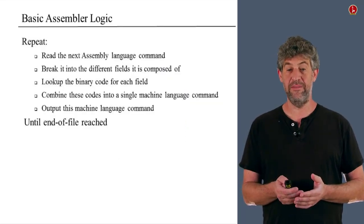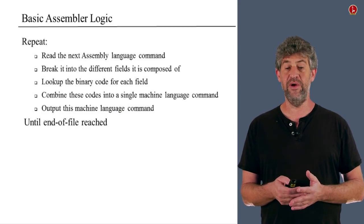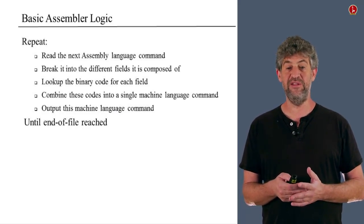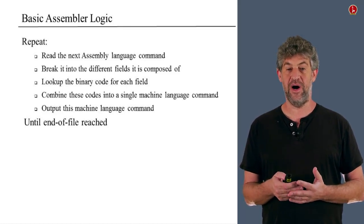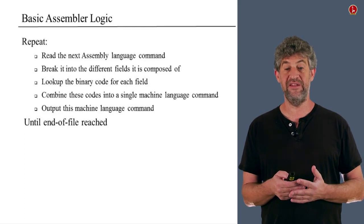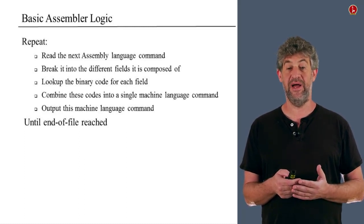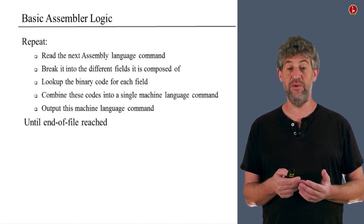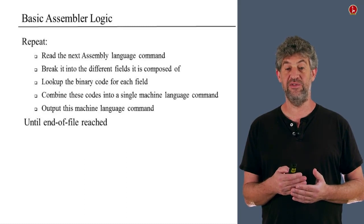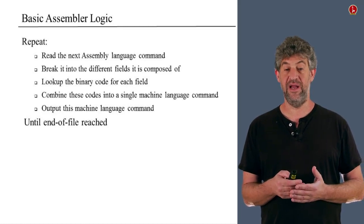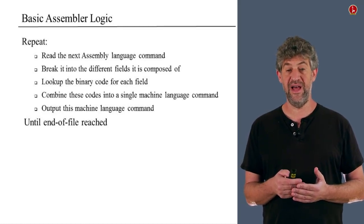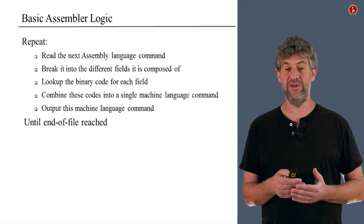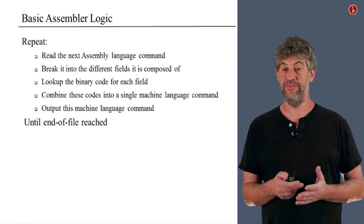The assembler program is a very simple program. It does the following basic loop, repeated again and again: it reads one assembly language command from the input, breaks it into its parts, translates each part to binary in a unique way specified by the language, puts the binary parts together to get the machine code, outputs that, and moves on to the next command — translating one command after another without having to remember anything from history.